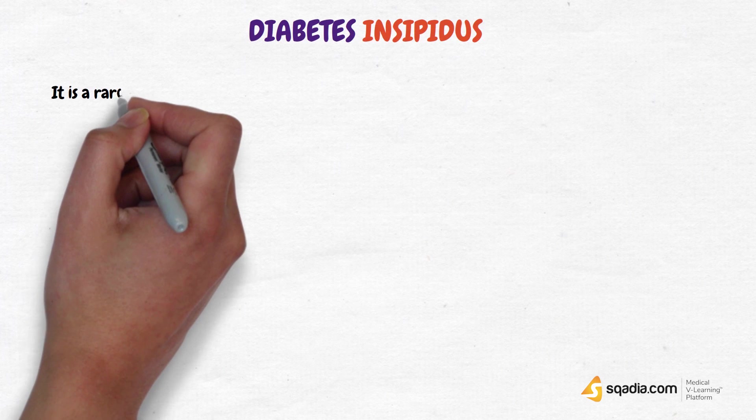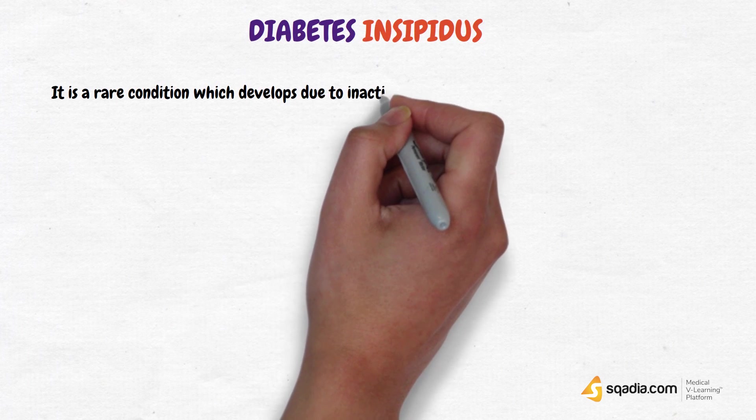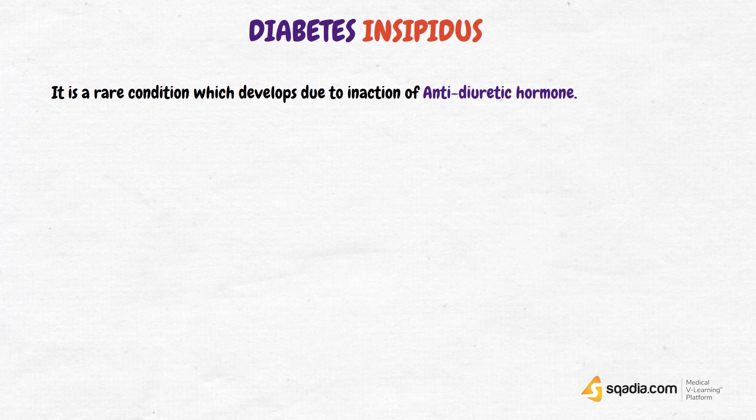Diabetes insipidus is a rare condition that develops due to the inaction of the hormone ADH. Let us remember where ADH comes from and how it works.